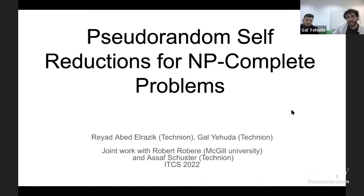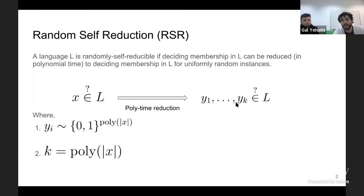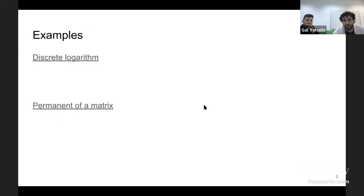My name is Gal, and I'm here with Riyad. Today we'll talk about pseudo-random self-reductions for NP-complete problems. Our starting point is random self-reduction. We say that a language L is randomly self-reducible if deciding membership in L can be reduced in polynomial time to deciding membership in L for uniformly random instances.